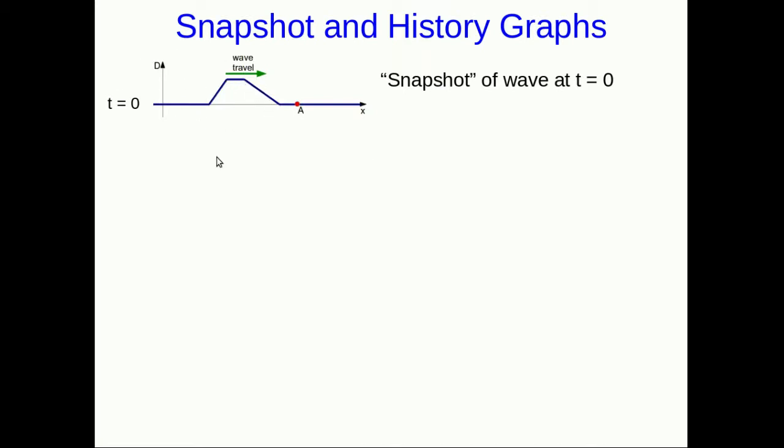Here is an example of a snapshot graph. Note that it has to be specified as being at an instant in time. Now I've indicated a point on the medium, so this is just a location. Thinking about the example of me sending waves down the long springs, think of this as a labeled point, just like the place where I had tied a string onto a coil of the long spring. It's a piece of the medium that we're going to keep track of.